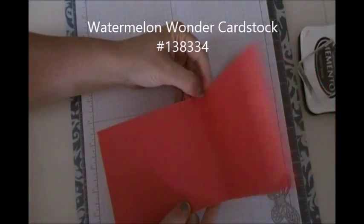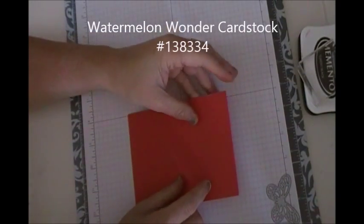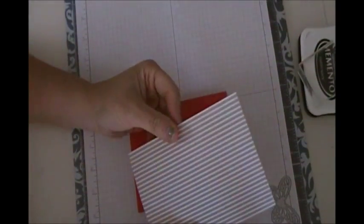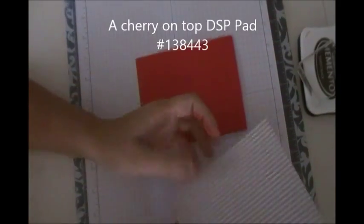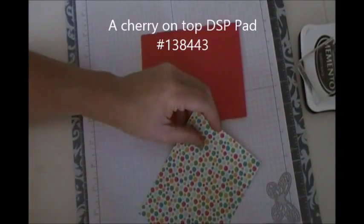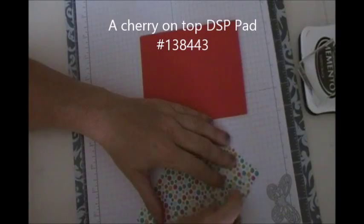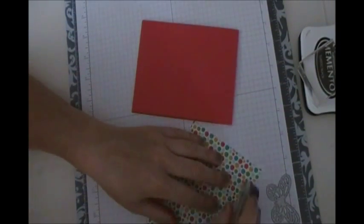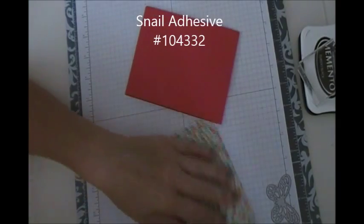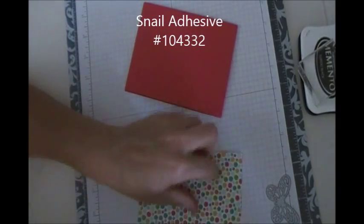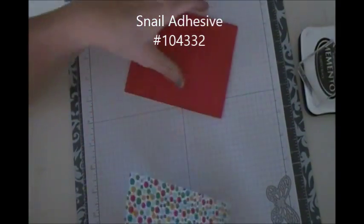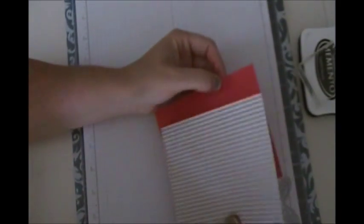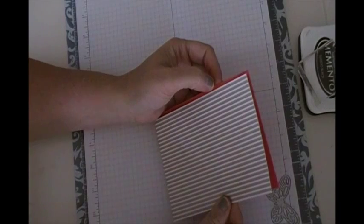We are going to make a simple card today using the Watermelon Wonder cardstock. And I also decided to use this pretty pinstripe designer series paper that comes from the carry-on-top paper thread. It comes in 6x6 true size. And I decided to use the stripes and the tip-top tote. I thought that this looked good together, paired up.